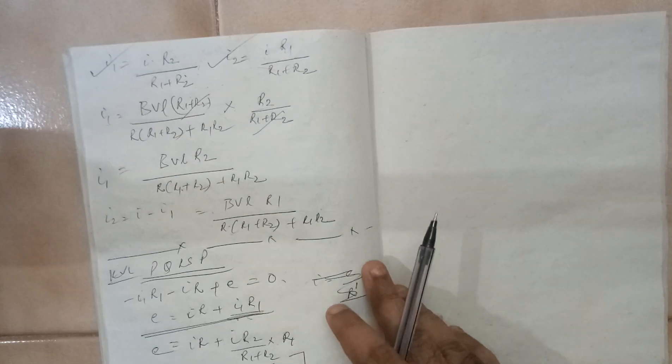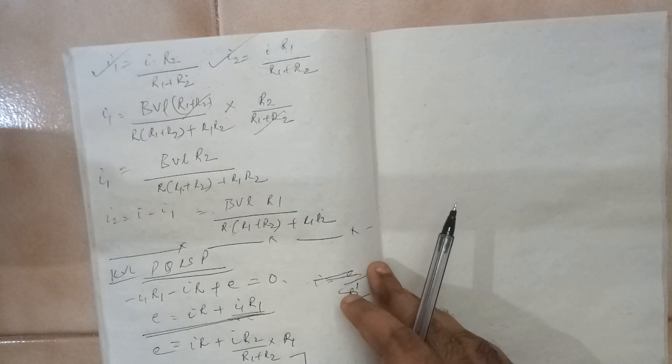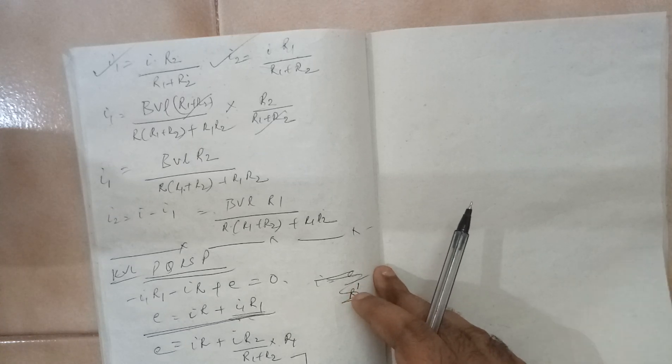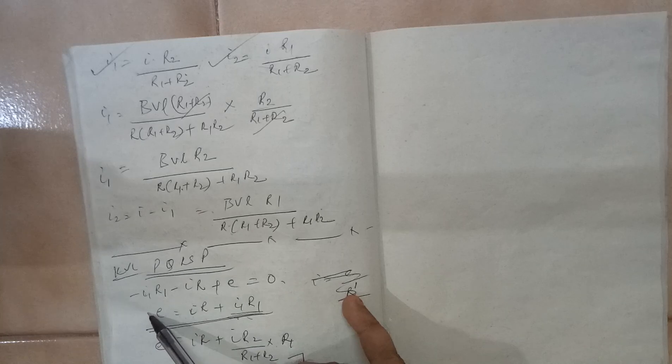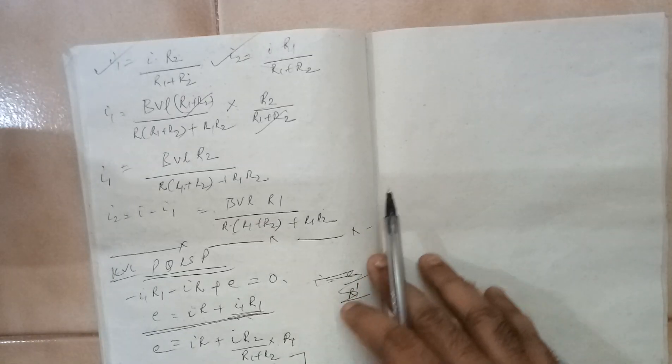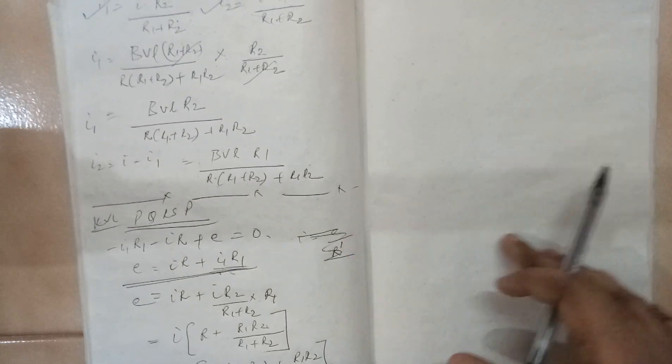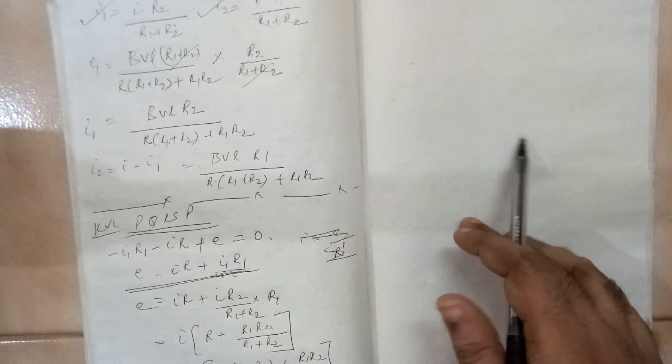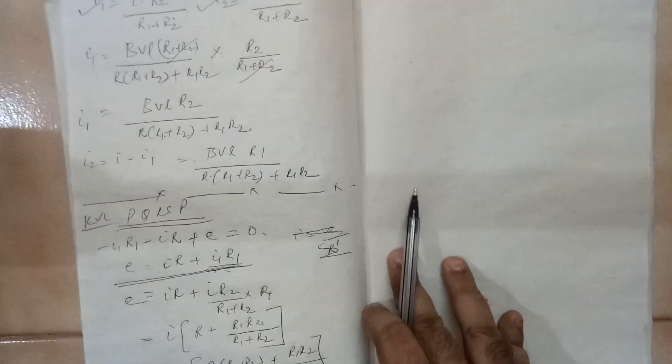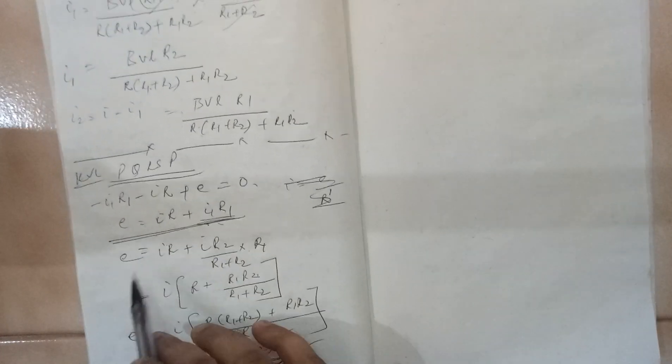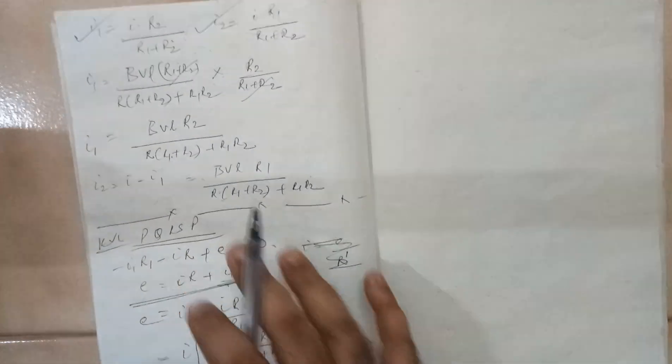So basically you have to understand the procedure. I have done the same derivation in two ways. Whether you use Kirchhoff rule or whether you use the motional EMF concept, you will end up with the same answer. So practice this and solve the numerical on this. Normally this formula you don't have to memorize. Some numerical will be given, so understand the procedure and apply it. Thank you.